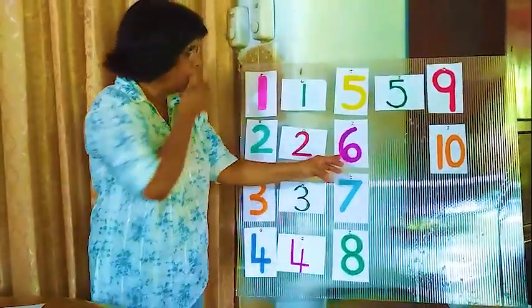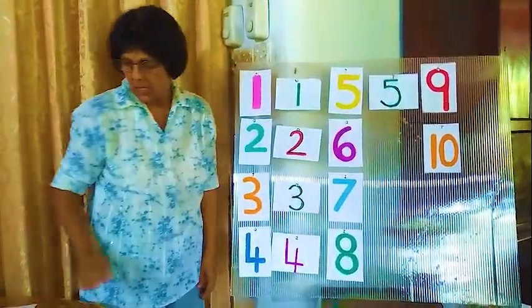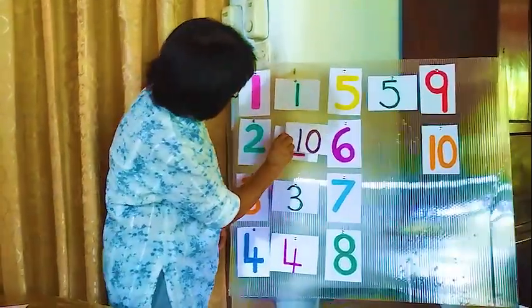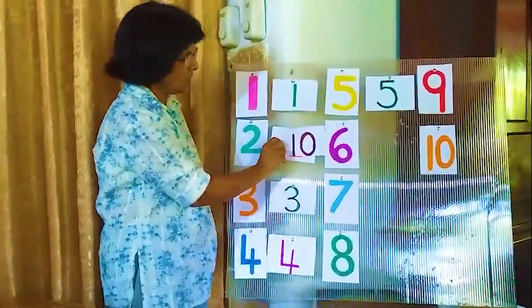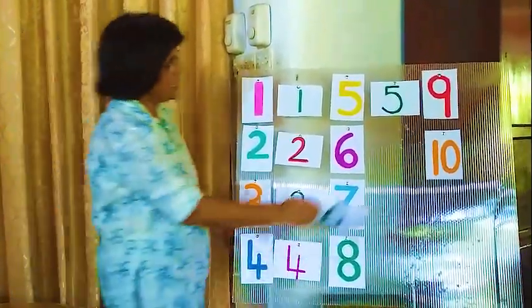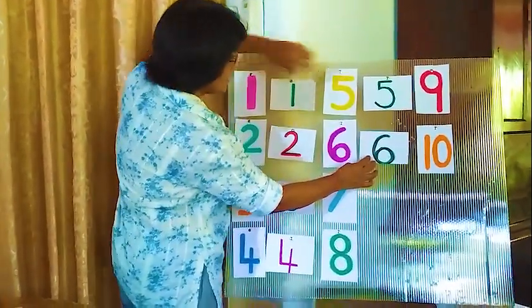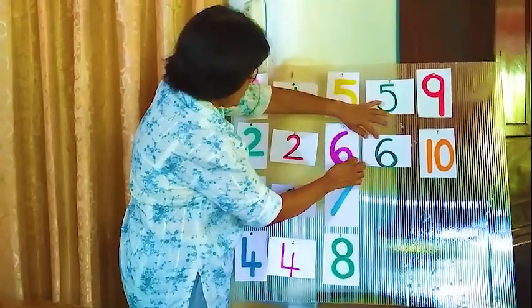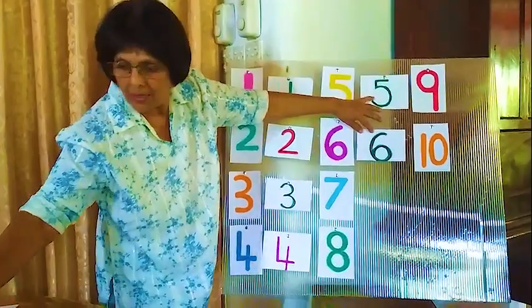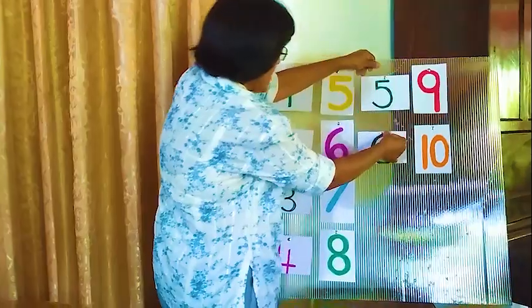Now here this one — this is number 6. We'll find number 6. Is this number 6? No, this is not number 6. Then what about this? Yes, this is number 6. Number 6, number 6, number 6. Here — number 6.